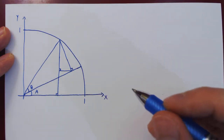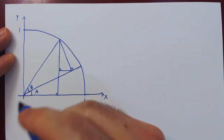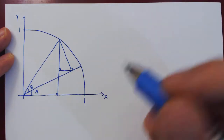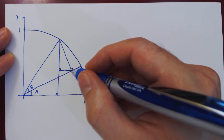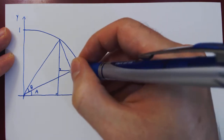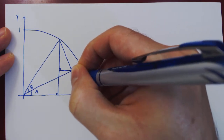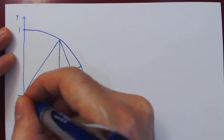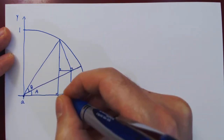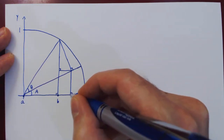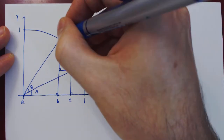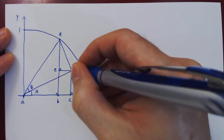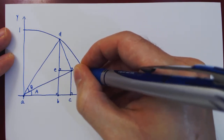Now we have all the right triangles that we need, so let's label a few key points. We also need to draw from this point down the perpendicular to the x-axis. The points of interest are: the origin, call it A; this point, call it B; this point, call it C; this other point, call it D; then this one, call it E; and finally the sixth point, call it F.